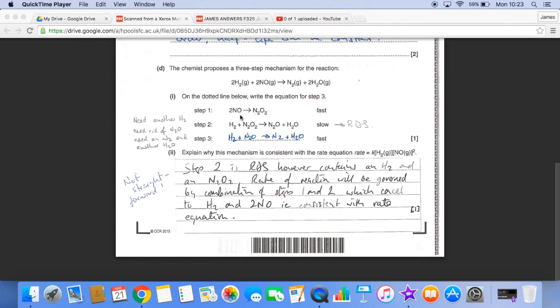And you're left with as reactants two NOs and an H2, which is consistent with the rate equation. So that is the way to explain that one. So you can see I've written up there, step two is the rate determining step, however it contains a hydrogen and an N2O2. The rate of the reaction will be governed by combining steps one and two, which cancel down to hydrogen and two NO, i.e. that is consistent with the rate equation.